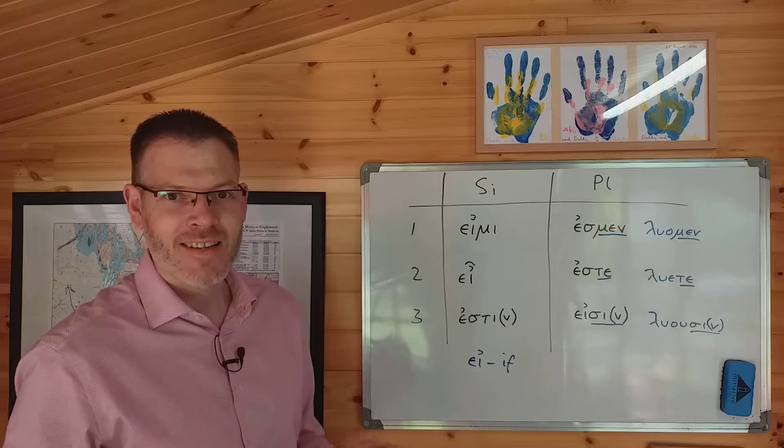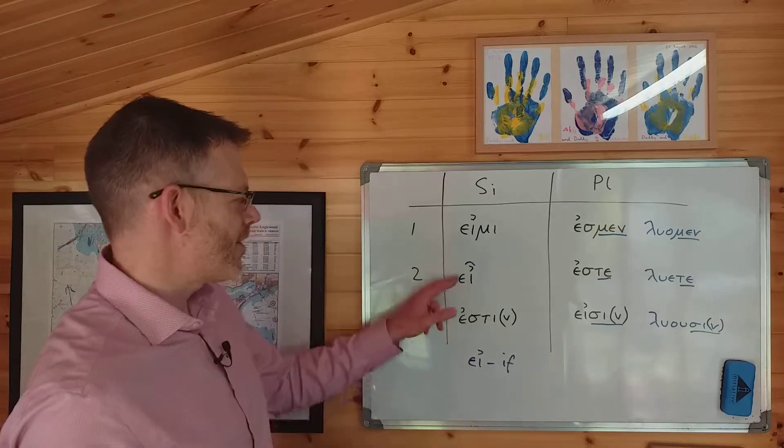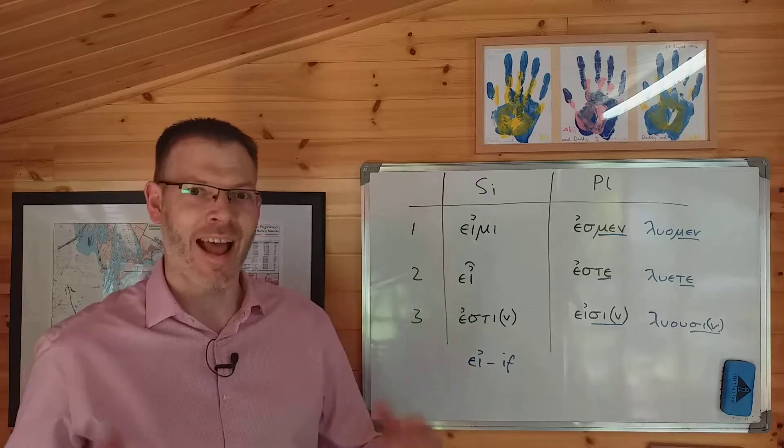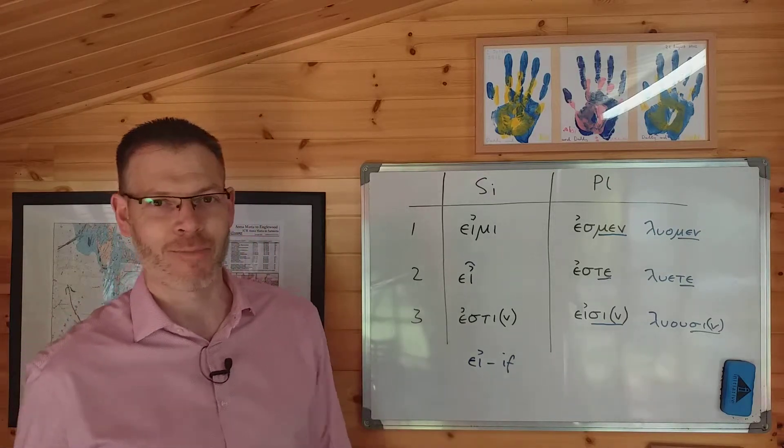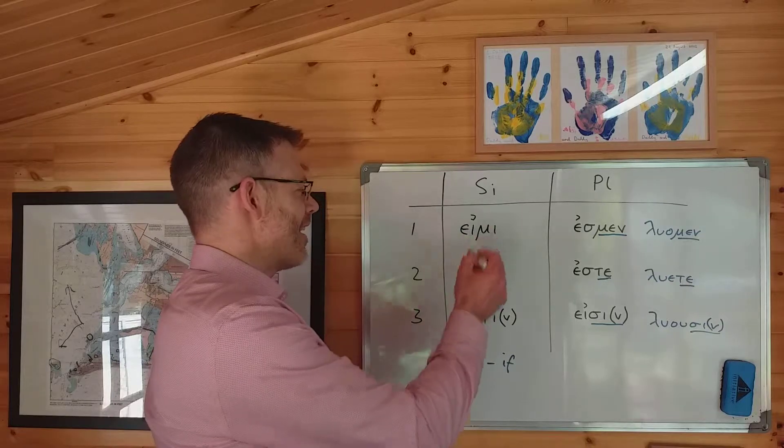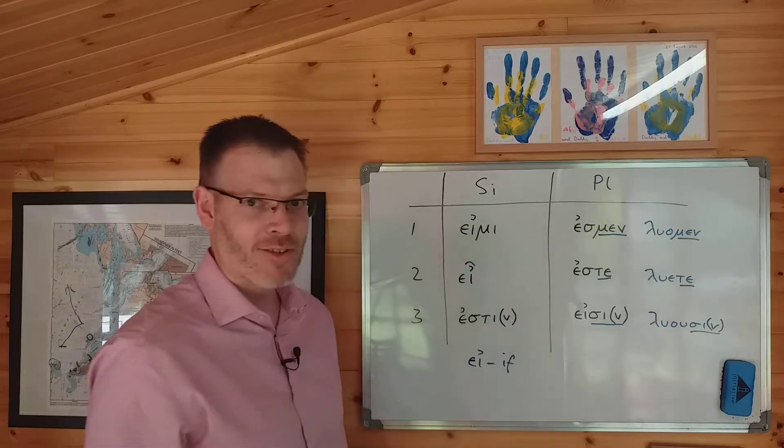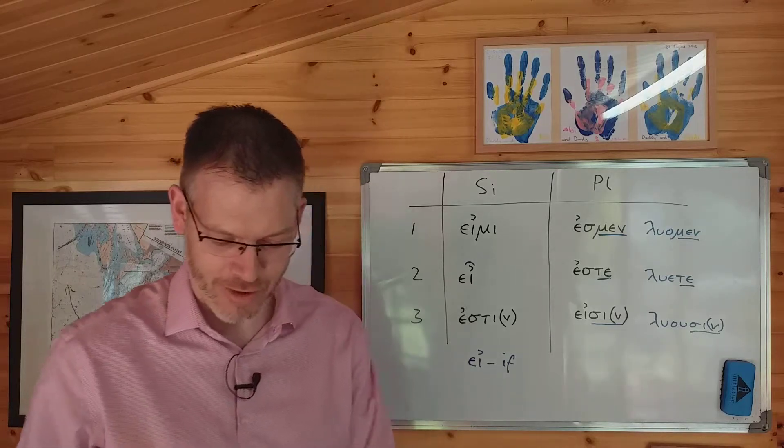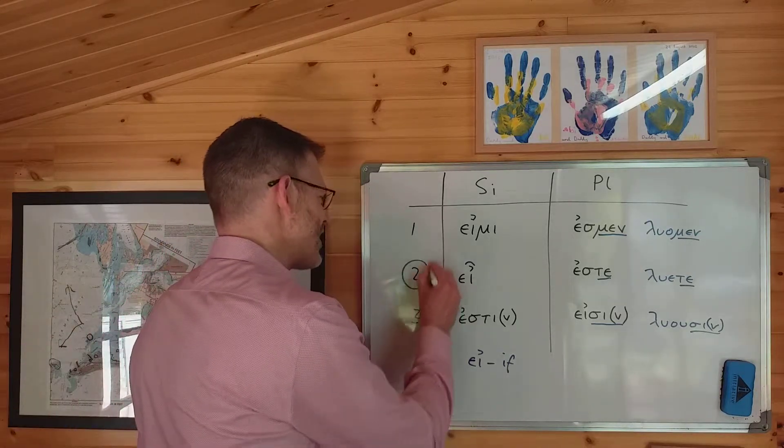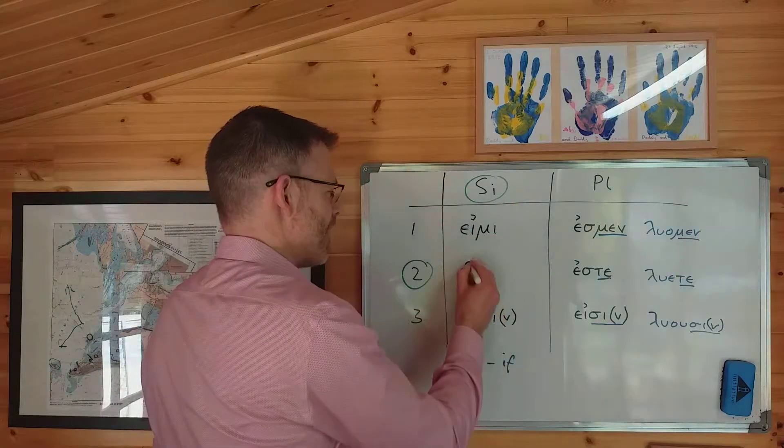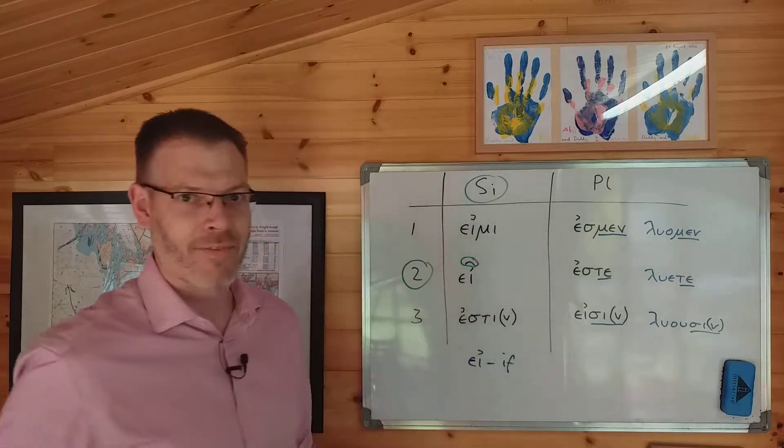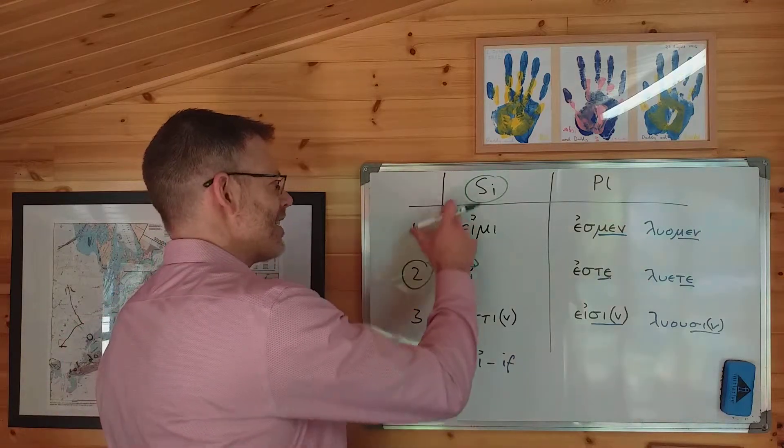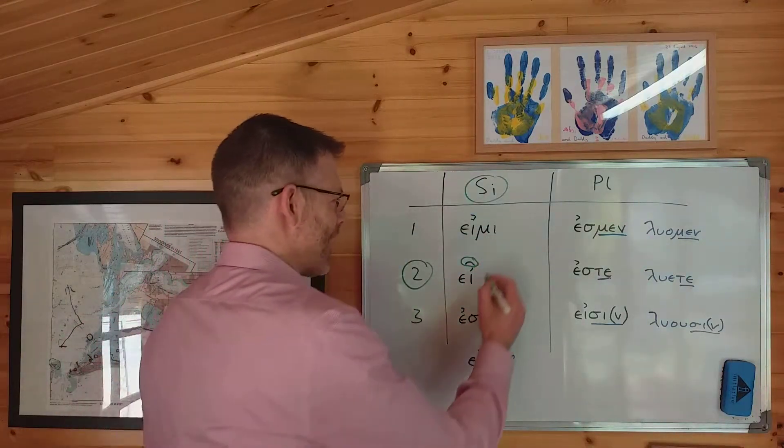The other thing to say is, here's a very easy way of remembering which of these two words has the circumflex, because that's what you're really interested in, right? How am I supposed to remember? Something else I've got to remember. Is it the second singular of εἰμί that has the circumflex, or is it εἰ if that has the circumflex? Here's how to remember it. Very, very simple. Second singular circumflex.